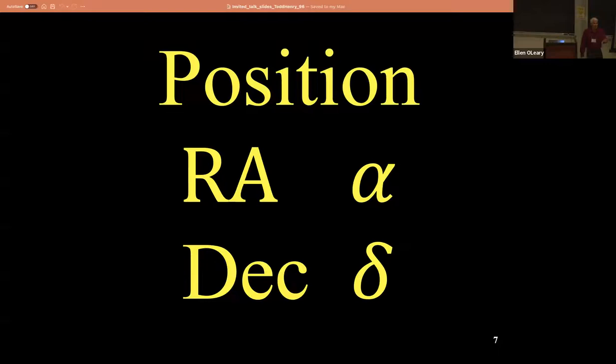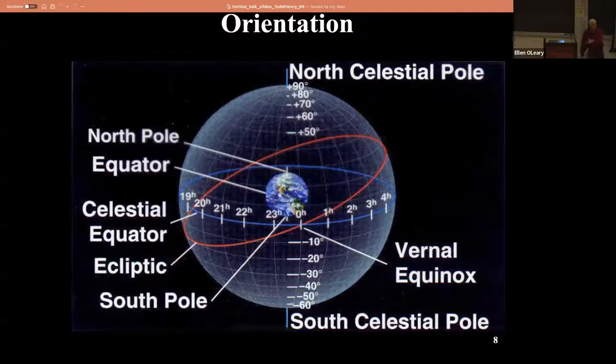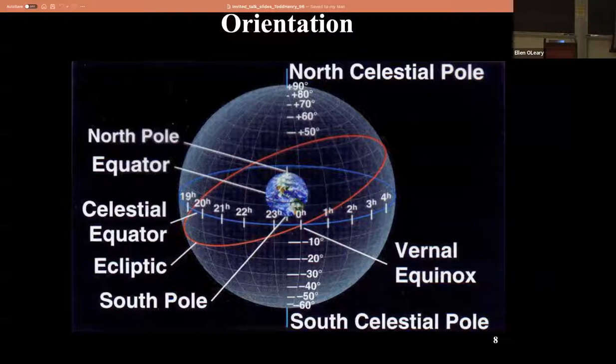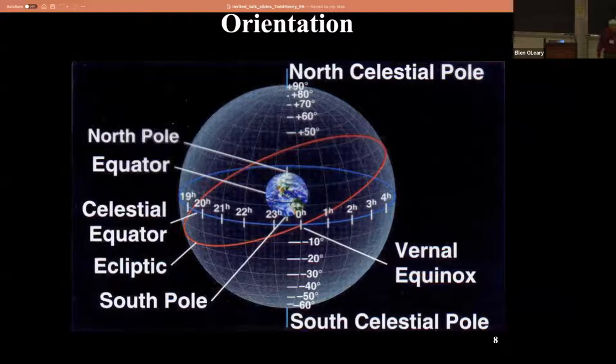Everybody's seen a celestial sphere before. You live on a little marble in the middle - you have a north pole, south pole, and equator. We just blow that out into the sky and make a celestial equator. But then there's this funny red line called the ecliptic. The Earth is not vertical relative to the rest of the solar system - it's tilted, so the ecliptic is tilted relative to the equator. We measure right ascension in hours going around - hours, minutes, and seconds of time - and declination going north to south, from plus 90 at Polaris down to minus 90.